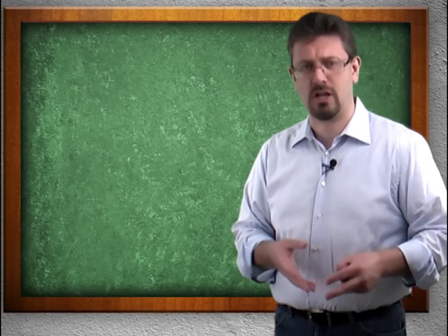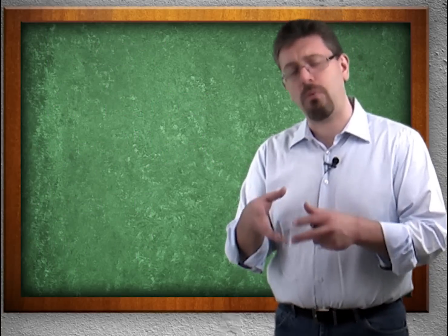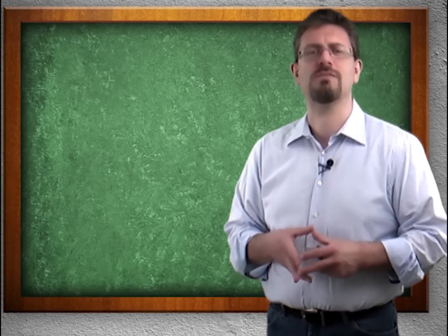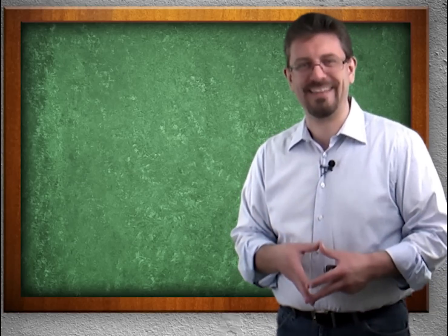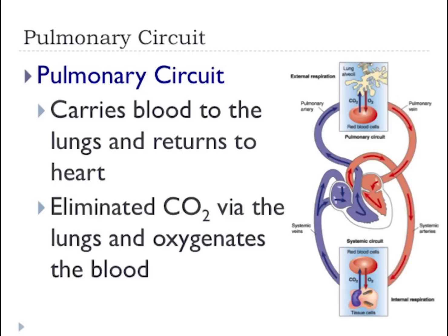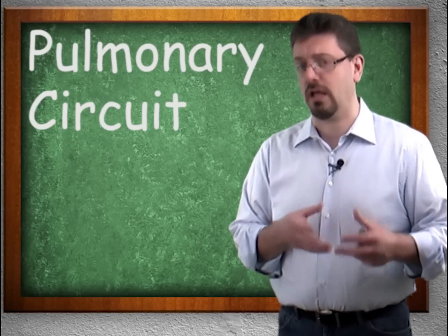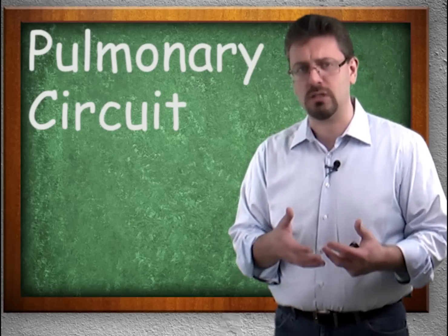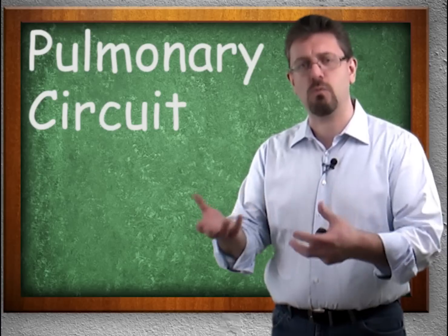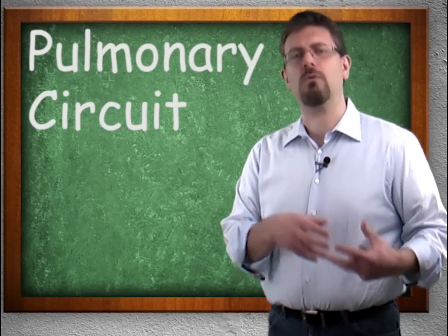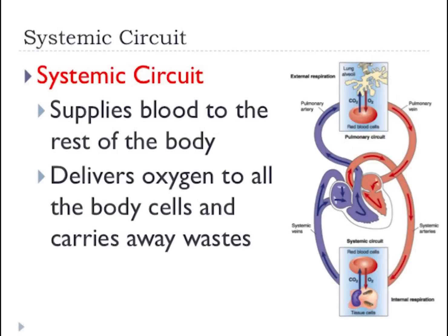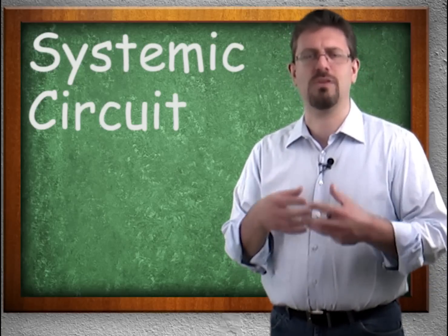We have two major divisions within the cardiovascular system: the portion that brings blood to the lungs, and the portion that brings blood to the toes and back. The pulmonary circuit brings deoxygenated blood — meaning blood low in oxygen that has been used by other parts of the body — to the lungs where gas exchange will occur.